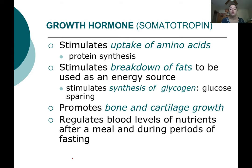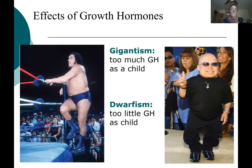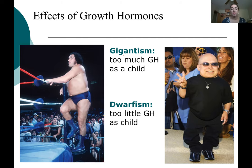Growth hormone also helps regulate blood levels of nutrients after a meal or after a period of not eating. Too much growth hormone as a child while the body is still growing can cause gigantism — Andre the Giant is a great example. Not enough growth hormone as a child causes dwarfism. These are two disorders related to growth hormone during childhood growth periods.